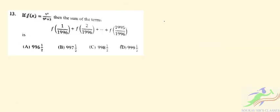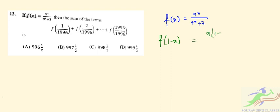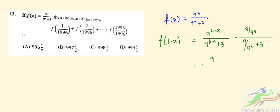Question number 13: if f(x) is given as 9^x / (9^x + 3), we have to find the sum of the terms. So f(1 - x) will be 9^(1-x) / (9^(1-x) + 3). Simplifying: 9/9^x divided by (9/9^x + 3), which gives 9 / (9 + 3 · 9^(1-x)). Taking 3 common, it will be 3 / (9^(1-x) + 3).